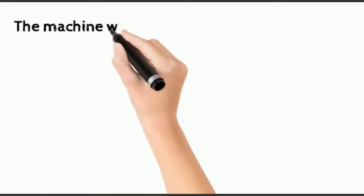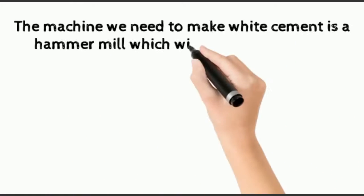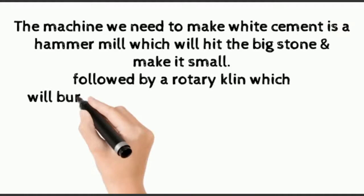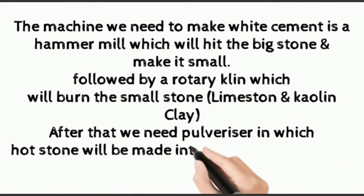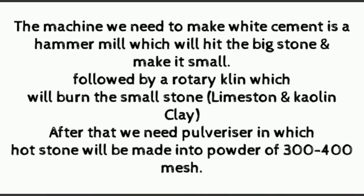The machine we need to make white cement is a hammer mill, which will hit the big stone and make it small, followed by a rotary kiln which will burn the small stone, limestone, and kaolin clay. After that, we need a pulverizer in which hot stone will be made into powder of 300 to 400 mesh.